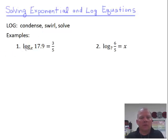So in this problem, the first one example, I have log base x of 17.9 equals 3/5ths. All right? So if you'll remember, let's go ahead and rewrite this in exponential form. So what that says, if I have the base x, I'm going to raise that. Here's our swirl. All right? Raise that to the 3/5ths. And set that equal to 17.9.